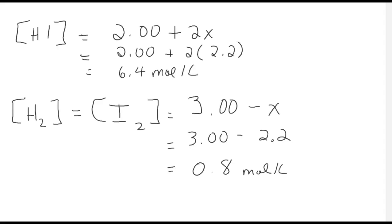Taking a final look at the results: the expression for [HI] was 2.00 + 2X — substituting in X and accounting for significant digits (one decimal place when adding) gives the equilibrium concentration of HI. For H₂ and I₂, using 3.00 − X and substituting in gives approximately 0.8 mol/L. Remember when adding and subtracting we match decimal places, not significant figures. I hope that makes sense — if you're struggling with any part of this, please reach out and I'll be happy to assist.